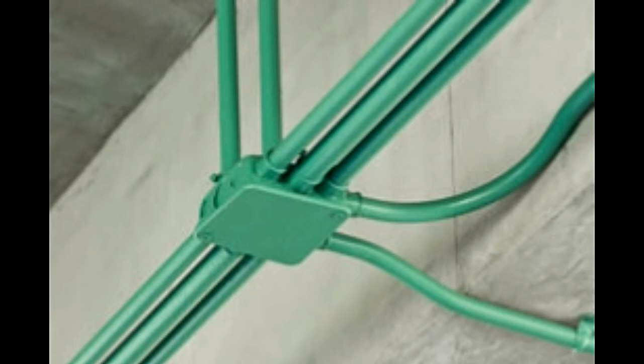The minimum size raceway that can be installed is half an inch. To install underground electrical conduit, you need to dig the ground at least 18 inches deep.